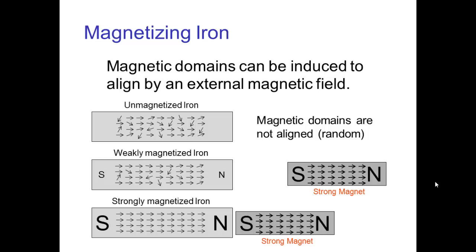Now if we bring the strong magnet even closer and leave it there for a long time, then more and more magnetic domains become aligned and eventually we have now a new piece of iron that has been magnetized.